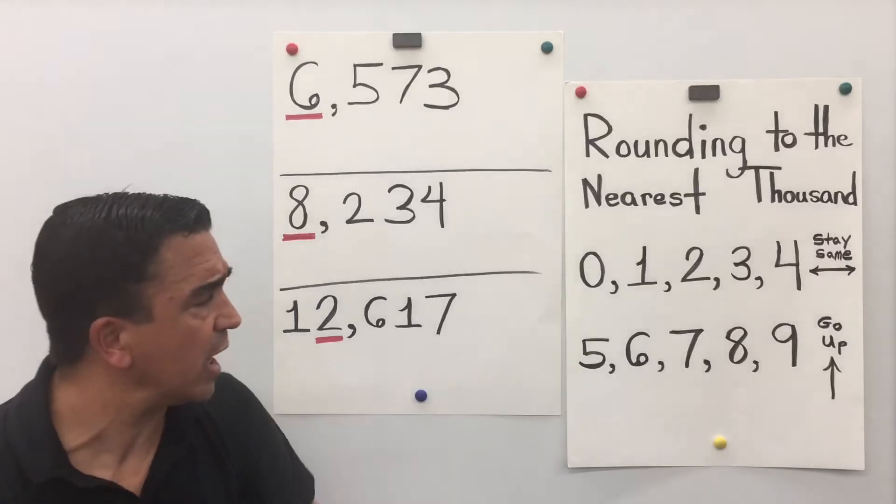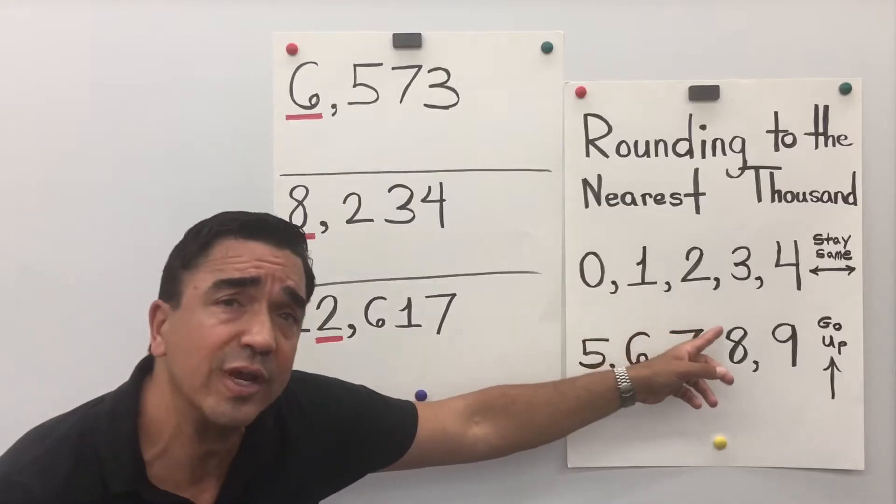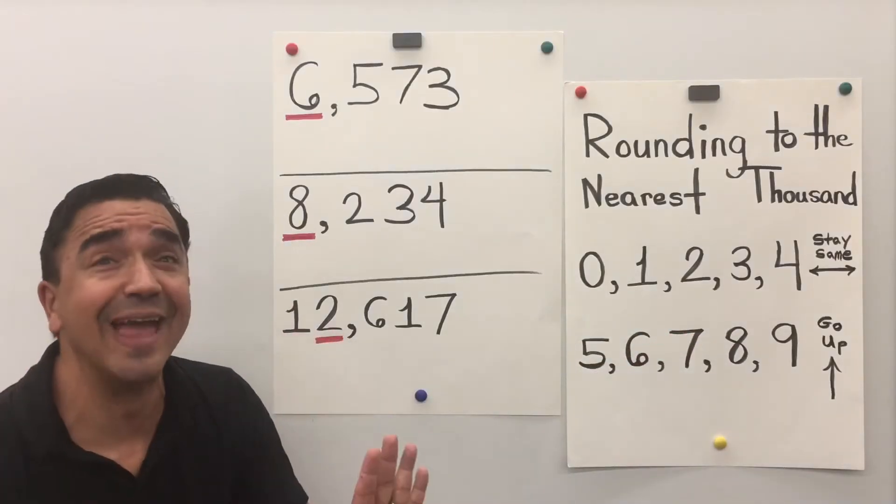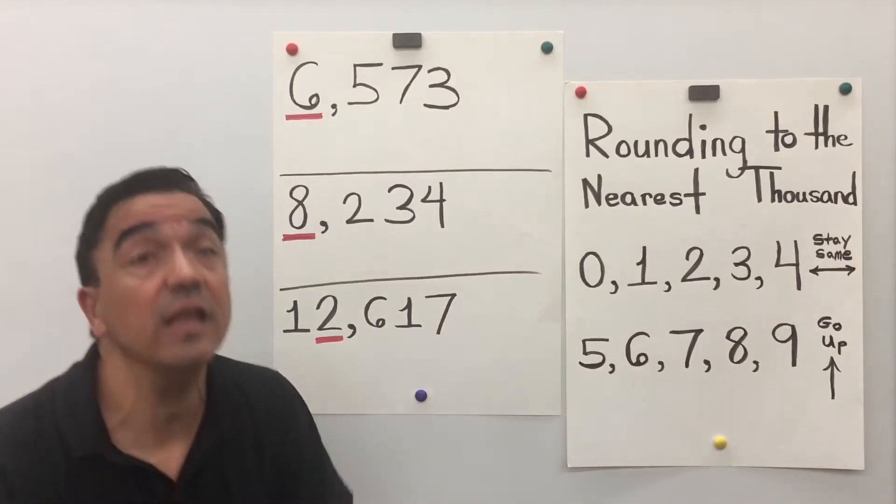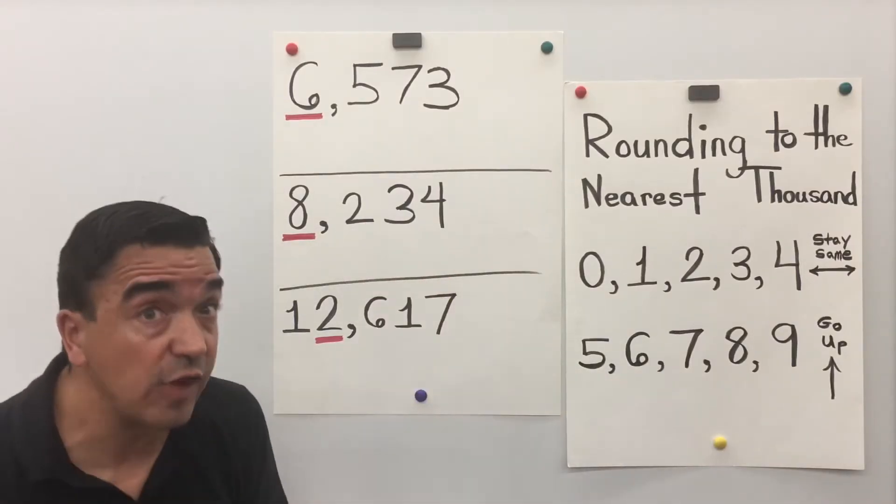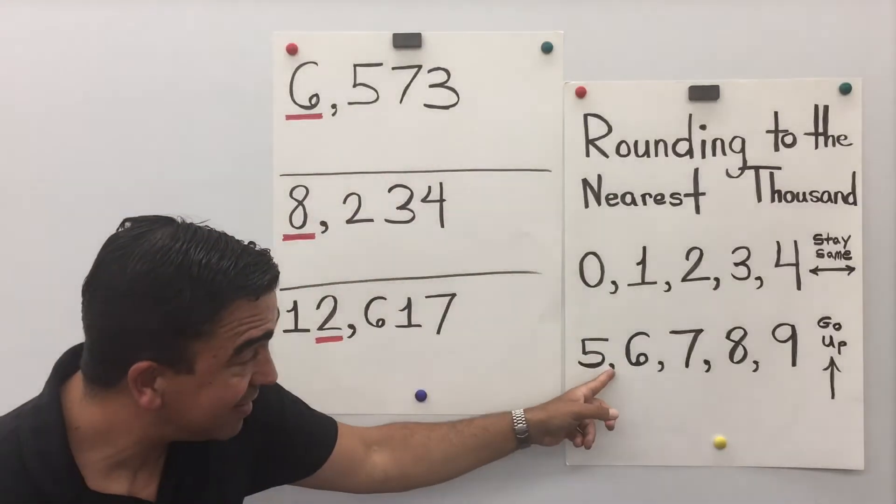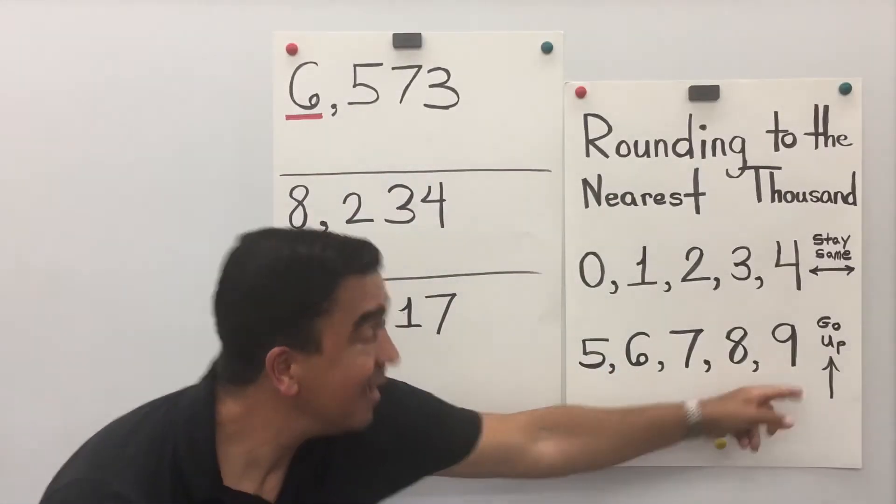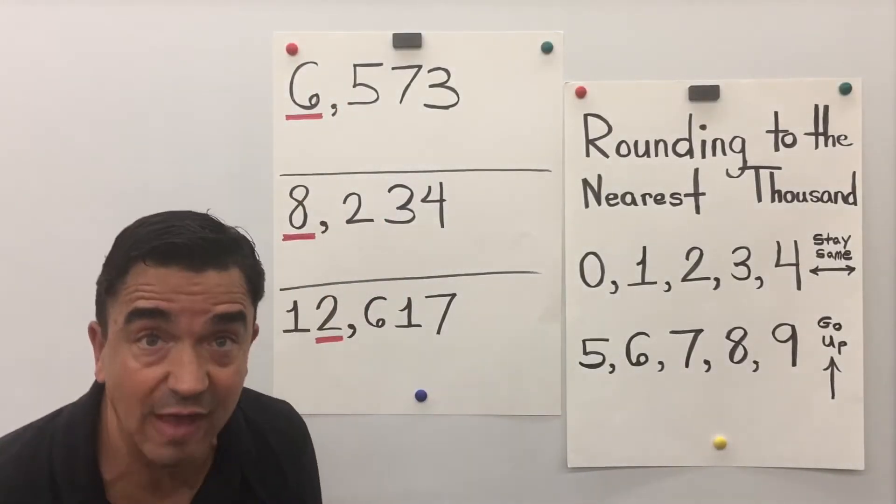Let's look at this quick trick. If it's a 0, 1, 2, 3, or 4, it stays the same. If it's a 5, 6, 7, 8, 9, it goes up. So, the 5 tells the 6 to go up. So that 6 becomes a 7.